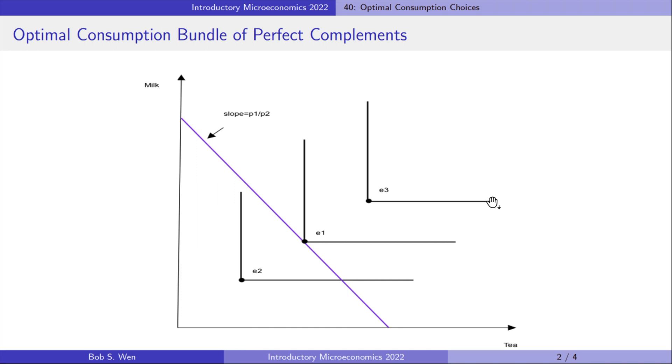Only the tea or the milk will not give the consumer any satisfaction. They must be consumed together. So the tea and milk are perfect complements for the consumer and the indifference curves are right angles.